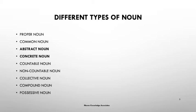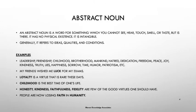As mentioned earlier, there are nine types of noun. In my previous video I covered proper and common noun. So what is an abstract noun? An abstract noun is a word for something which you cannot see, hear, touch, smell, or taste, but it is there. It has no physical existence — it is intangible. Generally it refers to ideas, qualities, and conditions.